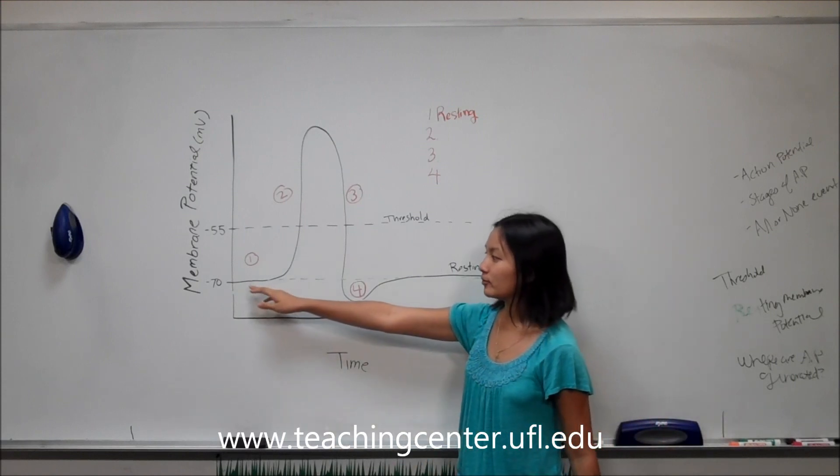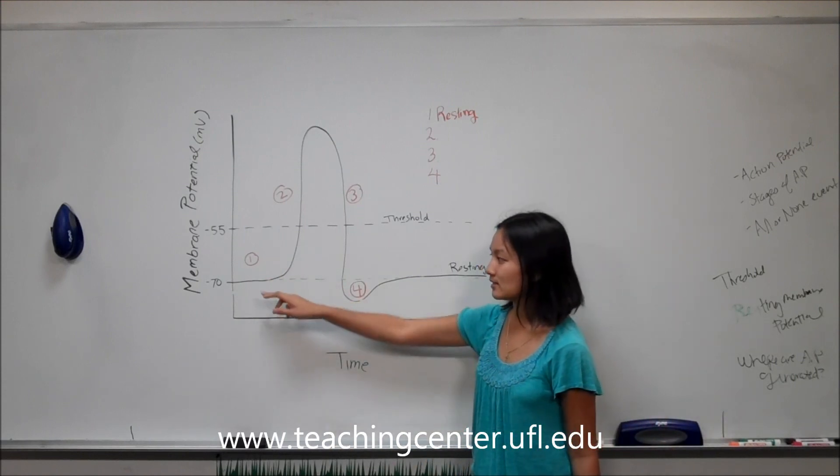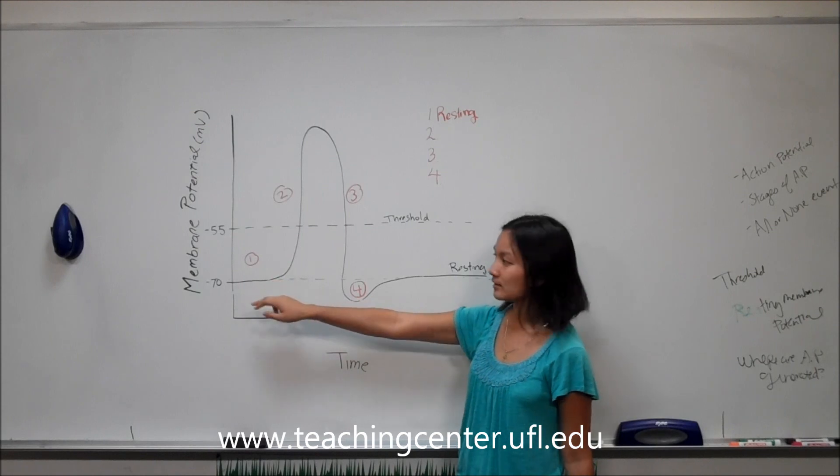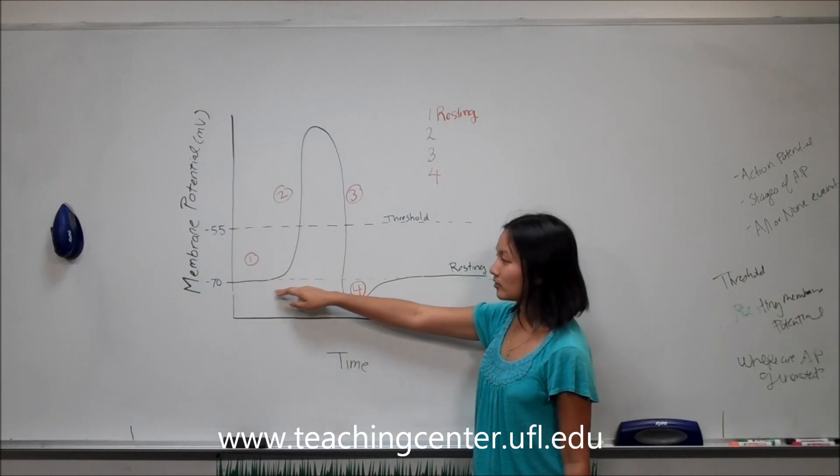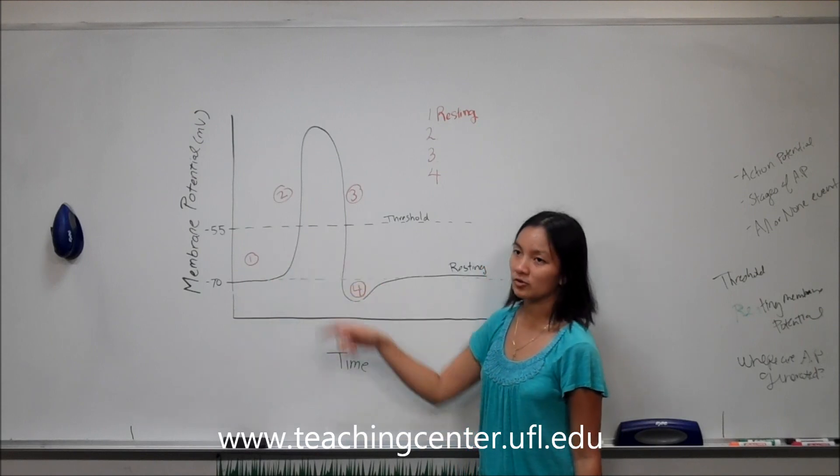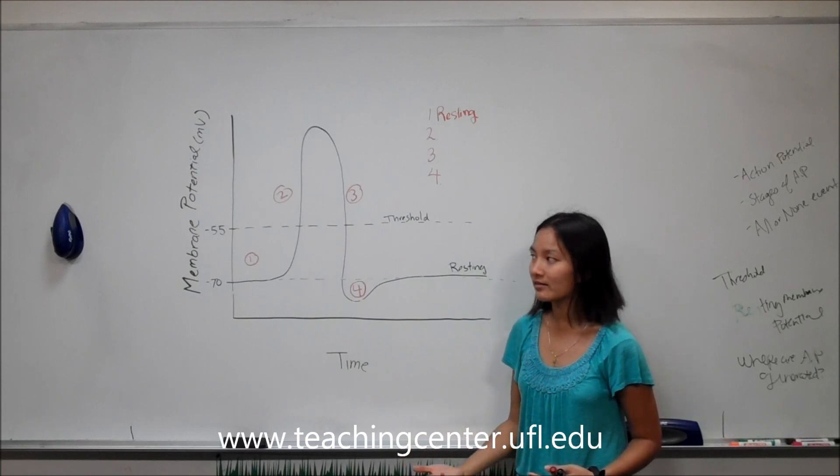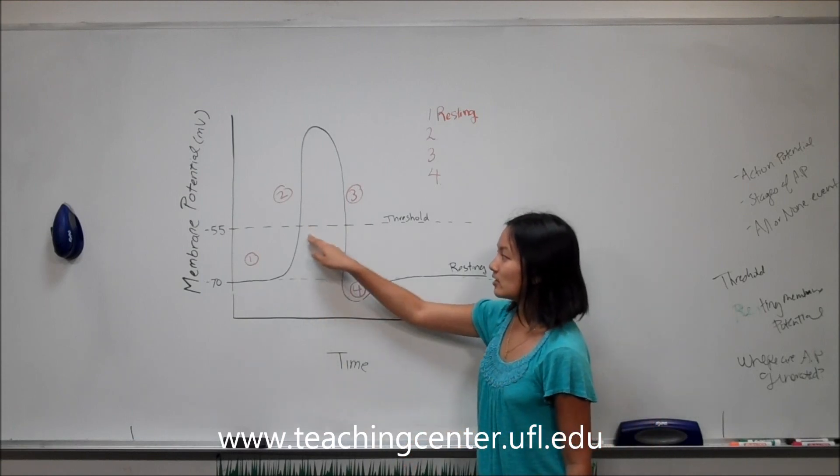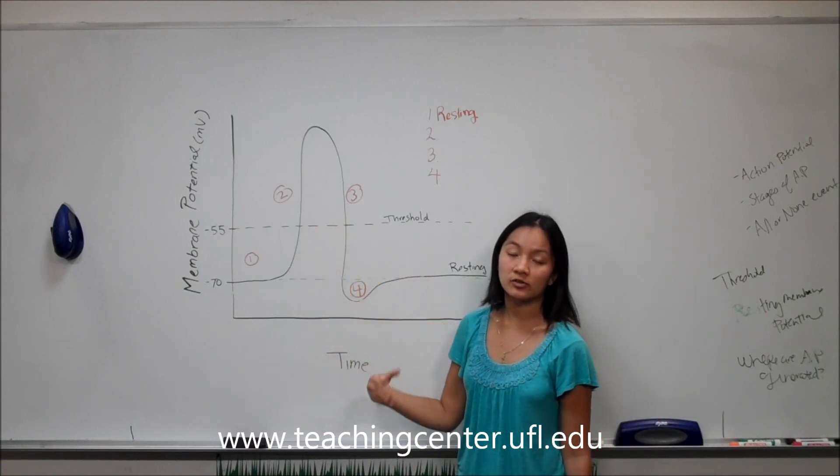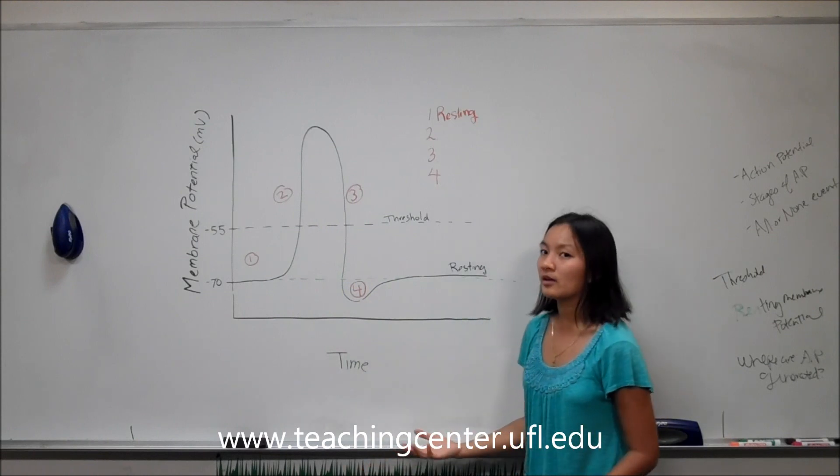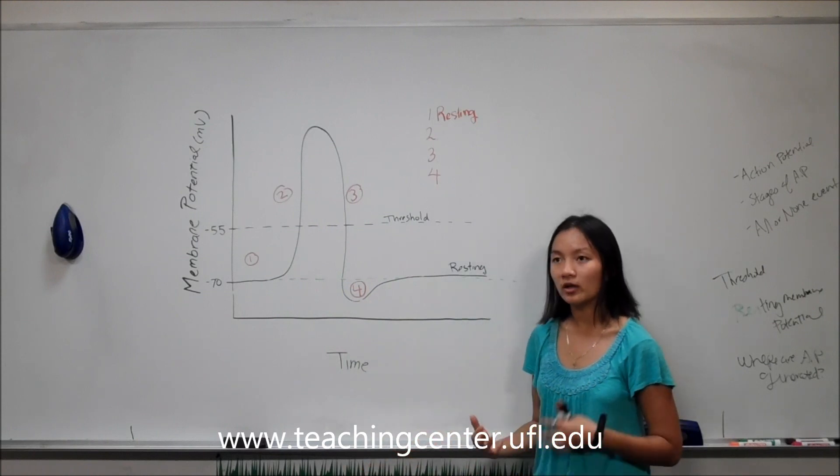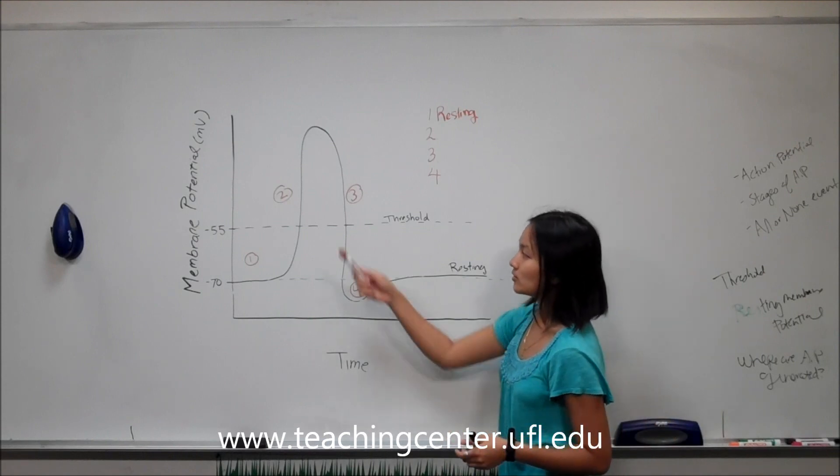After your cell receives a signal or some kind of stimulus event, it starts to increase in its membrane potential or become less negative. In this stage right here, as your membrane potential is increasing, it is becoming depolarized or less negative.